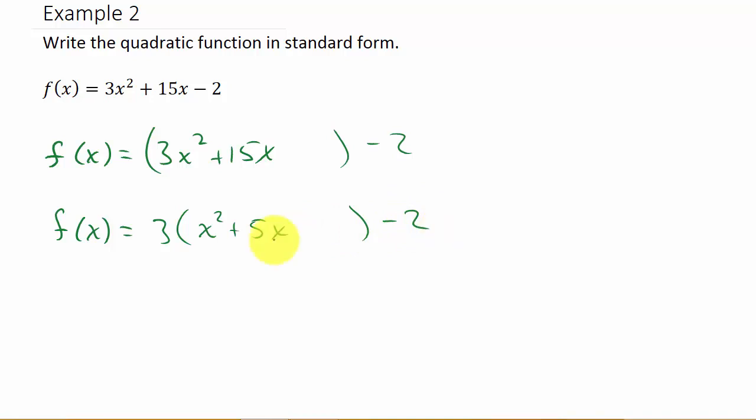Alright, so now we're going to complete the square on this. So if you remember, you take the number in front of x and you half it. So half of 5, that would be 5 over 2. So just divide the 5 by 2, so we half the 5. And then we square it. So 5 squared is 25, 2 squared is 4. And so I add that here, the 25 over 4. And since I added 25 over 4 in here, I have to come out here and subtract 75 over 4.